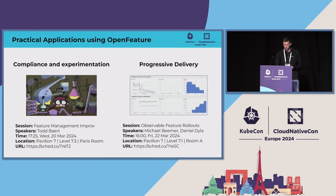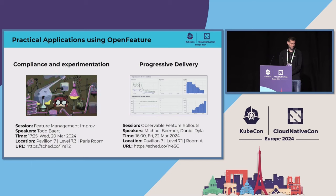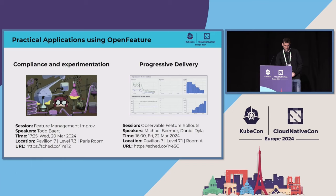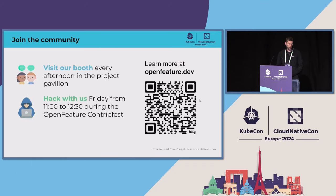If any of this is interesting to you, we have a lot of practical examples this week. There is a session on compliance and experimentation called Feature Management Improv with Todd Bart — it's tomorrow at 5:25. I'll also be presenting on Progressive Delivery: Observable Feature Rollouts with myself and Dan Dyla from the OpenTelemetry Governance Committee — that's on Friday at 4 o'clock. If you're interested, we're also going to be in the booth — we have the afternoon shifts in the Project Pavilion, so please stop by.